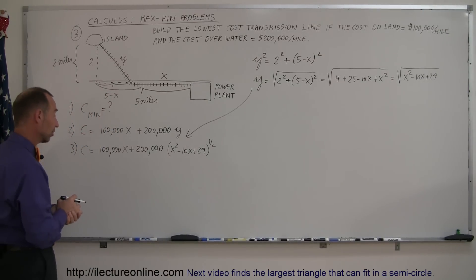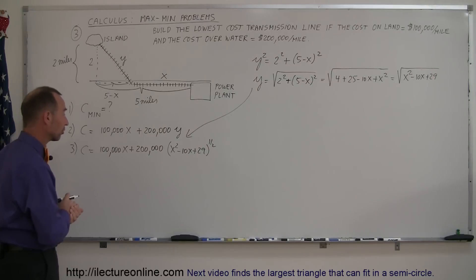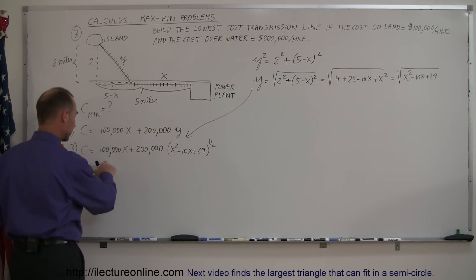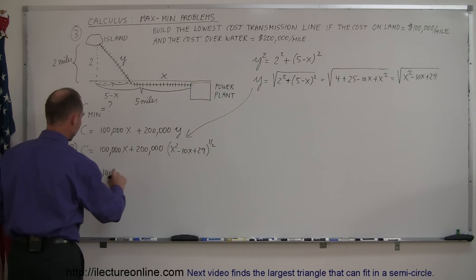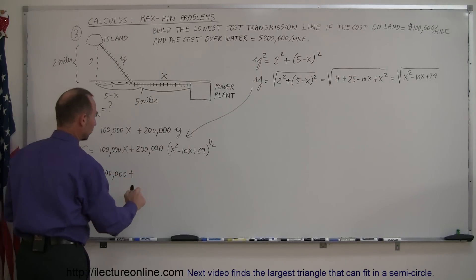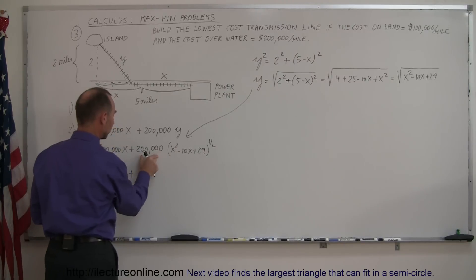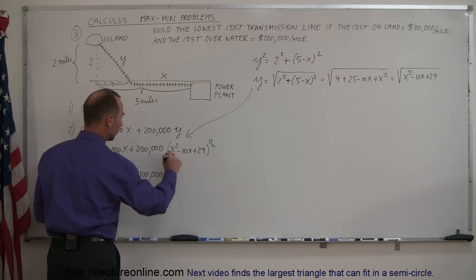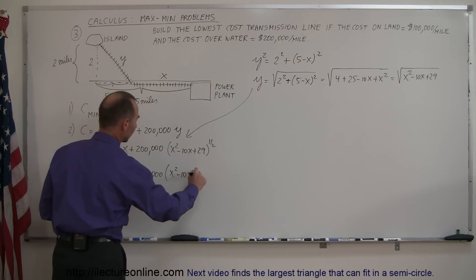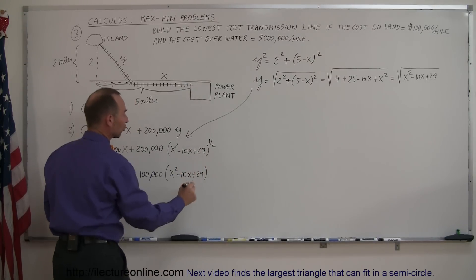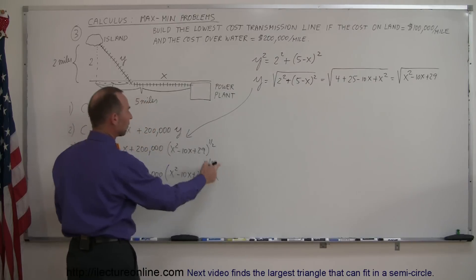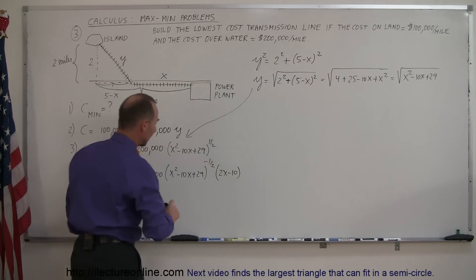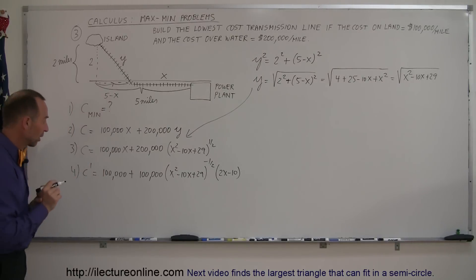Step four: take the derivative of this equation. So C prime equals 100,000 plus the derivative of the second term. Using the chain rule: one-half times 200,000 — which is 100,000 — times (x² − 10x + 29) to the negative one-half power, times the derivative of the inside, which is (2x − 10). That is the derivative of our cost equation.